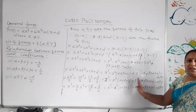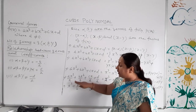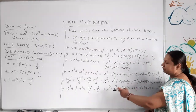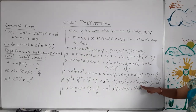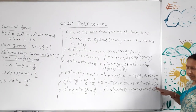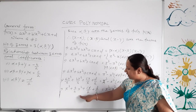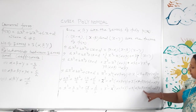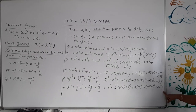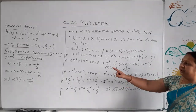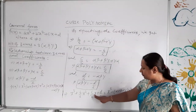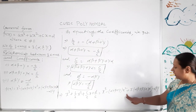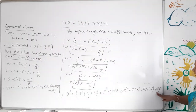To equate coefficients, we divide the polynomial by a, giving: x³ + (b/a)x² + (c/a)x + (d/a). Setting this equal to x³ − (alpha + beta + gamma)x² + (alpha·beta + beta·gamma + gamma·alpha)x − alpha·beta·gamma, and equating coefficients, we derive the three relationships between zeros and coefficients.